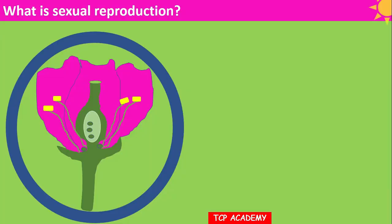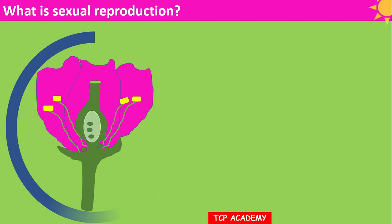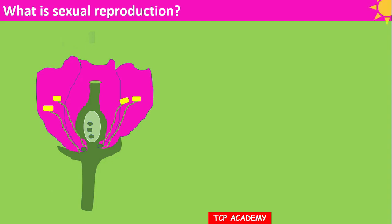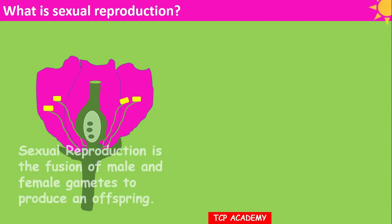What is sexual reproduction? It's definitely the first question that anyone would ask. You have 10 seconds in which to answer, boys and girls. Sexual reproduction is pretty much a fusion of the male and female gamete in order to produce a new offspring.